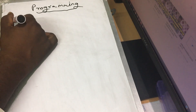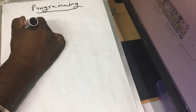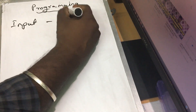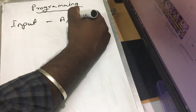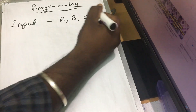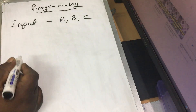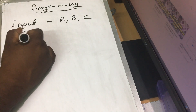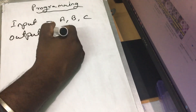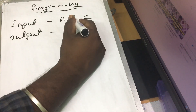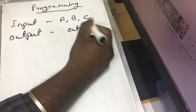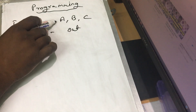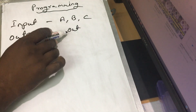So what is the input? The input is three numbers: A, B, and C. These are three numbers. So what is the output? If you know the biggest number, then there is one output — so the input gives one output.